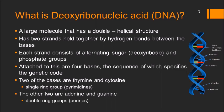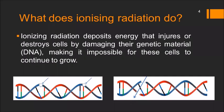DNA is a large molecule that has a double helical structure, with two strands held together by hydrogen bonds between the bases. Each strand consists of alternating sugar — deoxyribose — and phosphate groups. Attached to this are four bases, the sequence of which specifies the genetic code. Two of the bases are thymine and cytosine, forming a single ring group called pyrimidines, and the other two are adenine and guanine, forming double ring groups called purines.